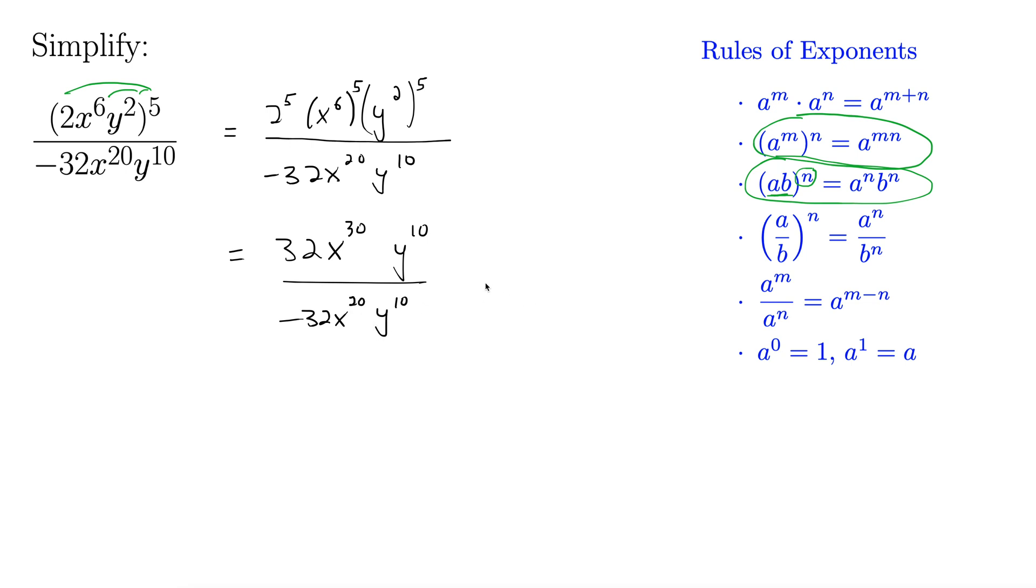Now there's a few ways we can deal with this. First off, look, these 32s cancel out. We still have a negative, so this negative is going to stay. So whatever our answer is, this negative can just come to the front. Same thing with these y to the 10th. They can just cancel out, right?